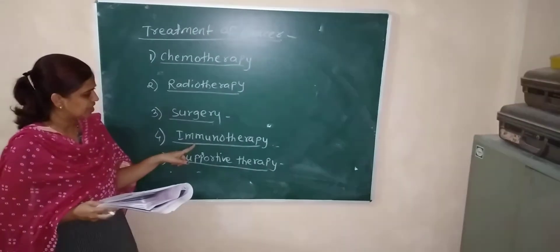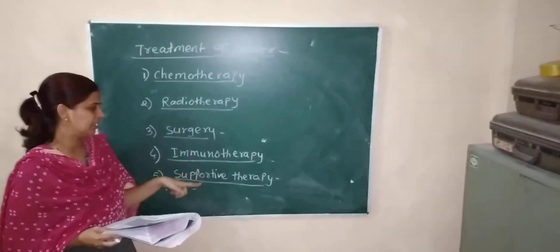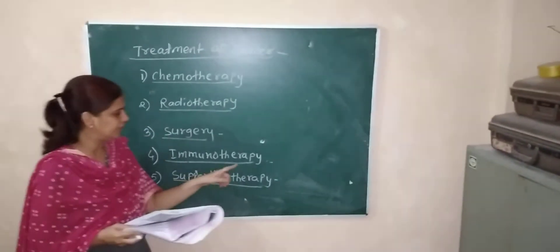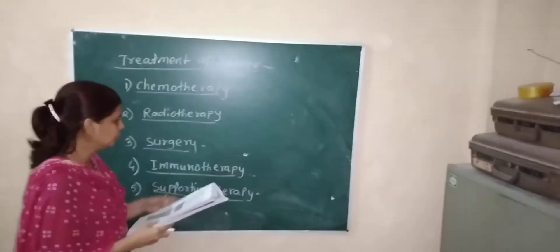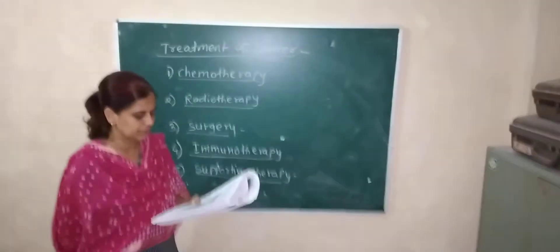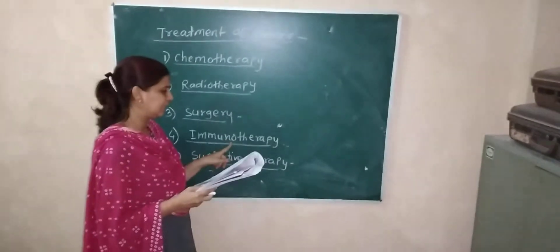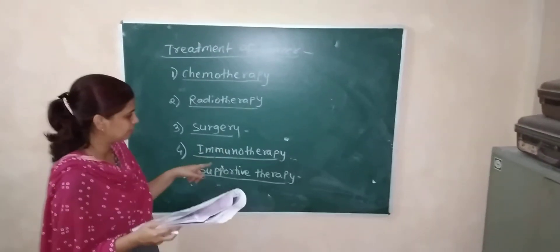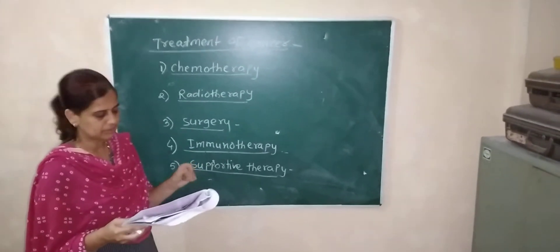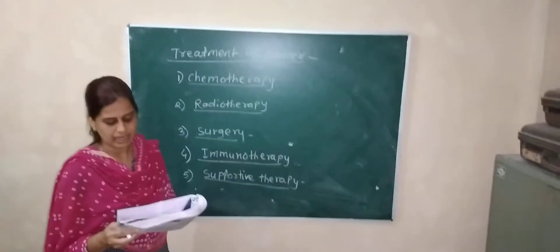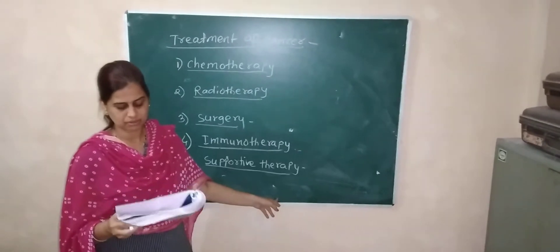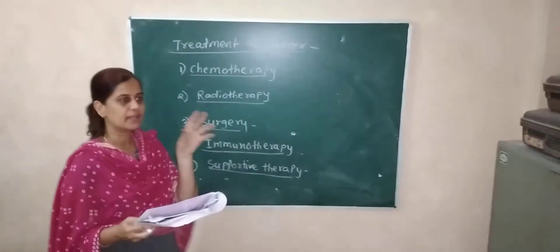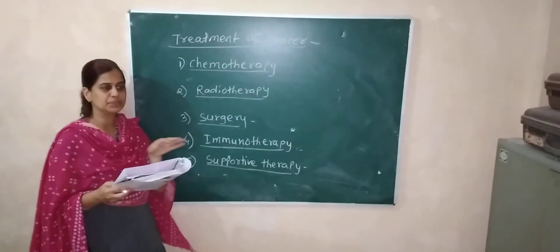Another treatment is immunotherapy. Tumor cells can avoid detection and destruction by the immune system. Immunotherapy helps the immune system detect and destroy tumor cells, though sometimes tumor cells can evade immune detection and continue growing.